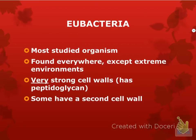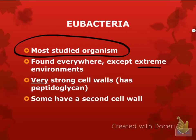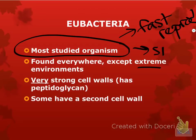Eubacteria, on the other hand, is found everywhere — obviously except those extreme environments. They are the most studied organisms. There are a few reasons for that: fast reproduction and they're small. It's a very common organism for scientists to use because of these reasons. They also have very strong cell walls, and sometimes they have a second wall.